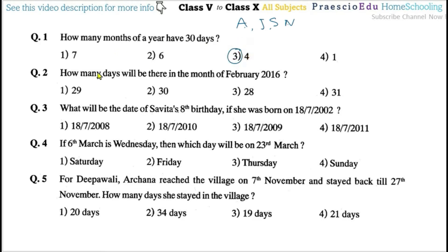Question number two: How many days will be there in the month of February 2016? 2016 can be divided by 4, so this is a leap year, and we know a leap year has 29 days in February. So the answer is option number one.